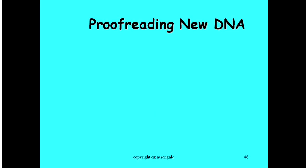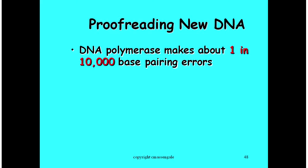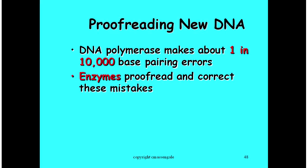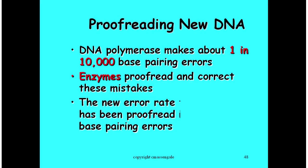DNA polymerase is pretty accurate, but every once in a while it matches the wrong base — for example, a G with an A when it should have matched a T with an A. That happens in one out of every 10,000 bases. We have enzymes that proofread and correct these errors, which drops the error rate down to one in one billion base pairing errors.